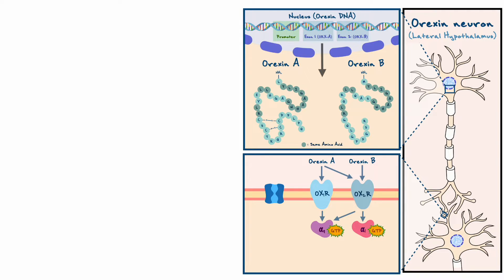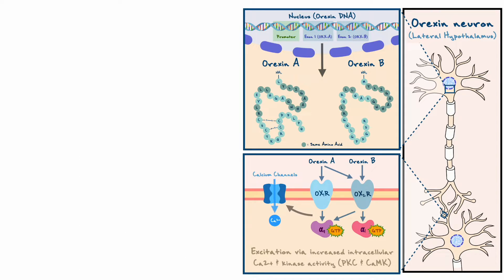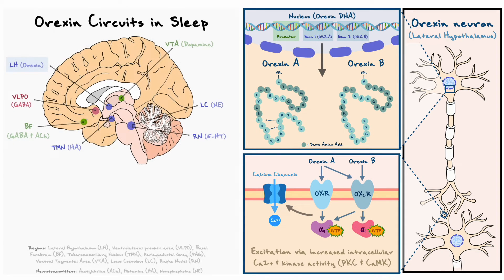I will not go into the details of the downstream effects, but if you want more information about this, you can consult the review referenced in the conclusion. To keep it simple, the activation of either OX1R or OX2R causes an excitation via an increase in intracellular calcium through the opening of calcium channels and the increase in kinase activity. With this in mind, we can turn our attention to the function of orexin neurons — it turns out that they have two primary roles with respect to sleep, namely they contribute to the promotion of wakefulness and the suppression of REM sleep.